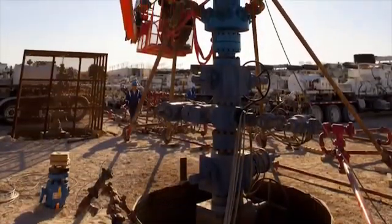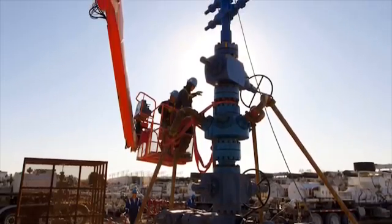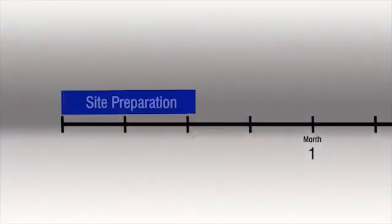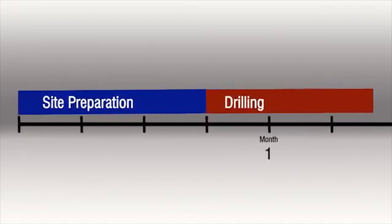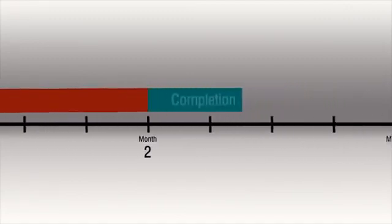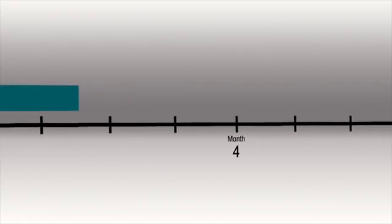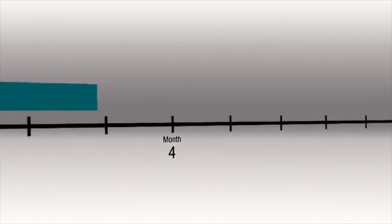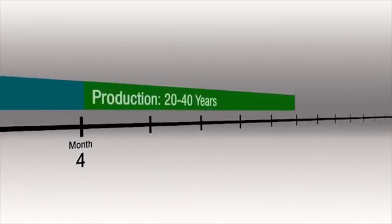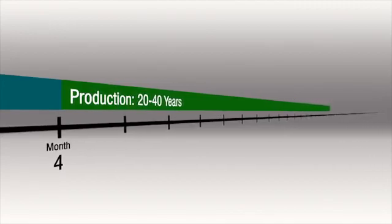The whole process of developing a well typically takes from 3 to 5 months: a few weeks to prepare the site, 4 to 6 weeks to drill the well, and then 1 to 3 months of completion activities, which includes 1 to 7 days of stimulation. But this 3 to 5 month investment can result in a well that will produce oil or natural gas for 20 to 40 years or more.